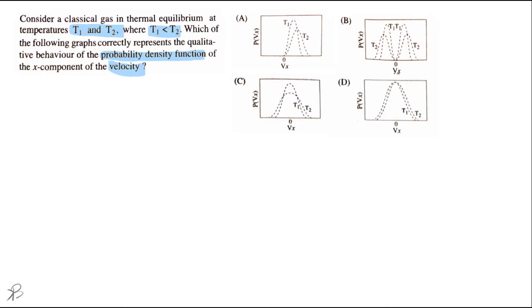What are the important points in this question? T2 is greater than T1, and the second thing is the probability density function and the x component of velocity. The first point is that the x component of velocity, vx, can take negative as well as positive values because it is the vector component of velocity vx and not speed or the modulus of velocity.